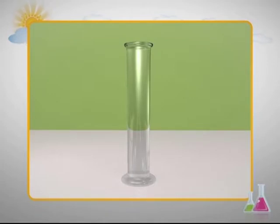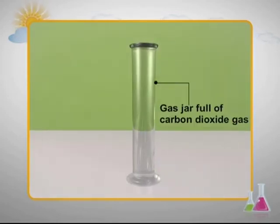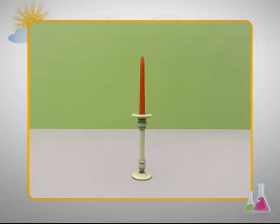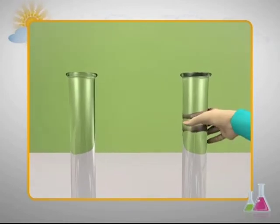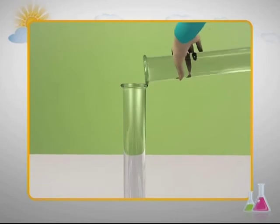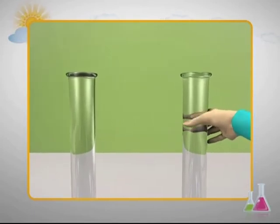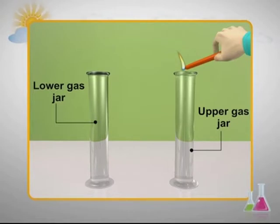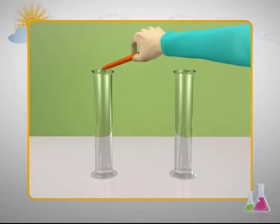Let's explore the properties of carbon dioxide by performing a simple activity. You will require one empty gas jar (a gas jar containing air), one gas jar full of carbon dioxide gas, and one candle. To begin the activity, invert the gas jar full of carbon dioxide gas over the empty jar and wait for some time. Now light the candle and introduce it in the upper gas jar. You will observe that the candle continues to burn. Then introduce the candle in the lower gas jar. You will be surprised to notice that the candle extinguishes in no time.